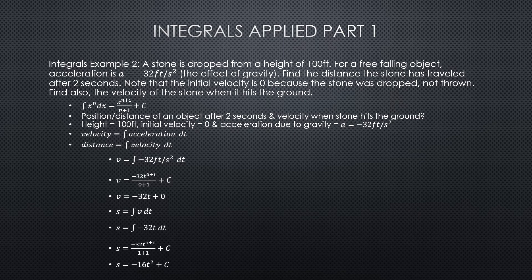The next question: a stone is dropped from a height of 100 feet. For a free-falling object, acceleration due to gravity is negative 32 feet per second squared. Find the distance the stone has traveled after 2 seconds. Note that the initial velocity is zero because the stone was dropped and not thrown. In addition to finding the distance after 2 seconds, it also wants to know the velocity of the stone when it hits the ground.